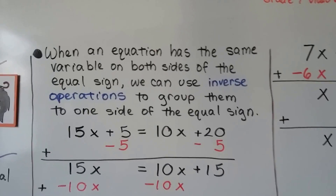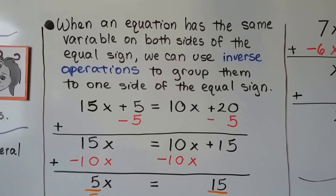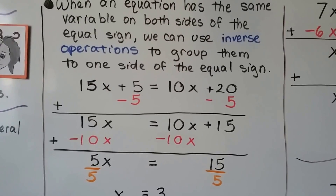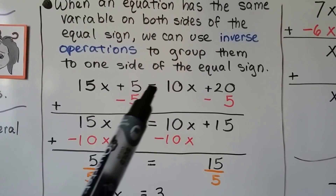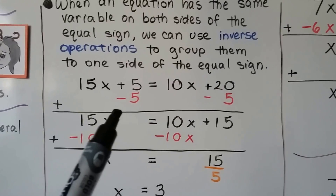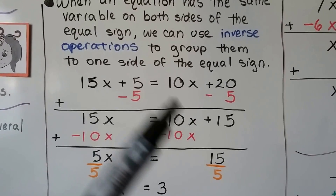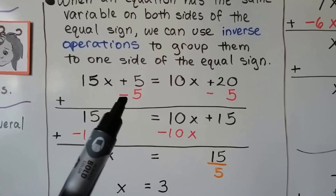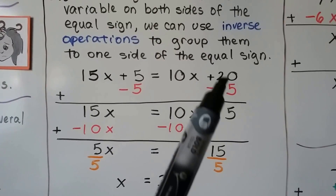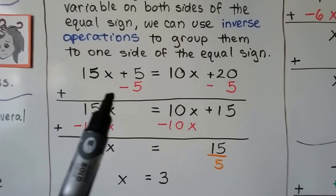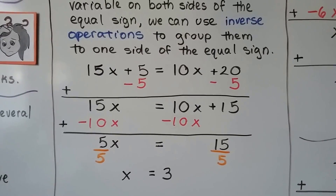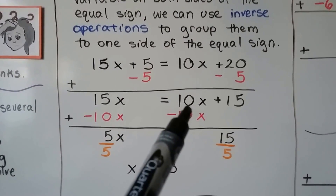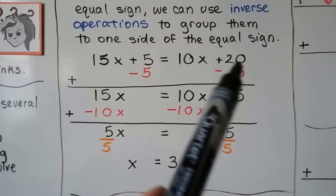When an equation has the same variable on both sides of the equal sign, we can use inverse operations to group them to one side. Here is 15x plus 5 equals 10x plus 20. We need to get all the numbers on one side and all the x's on one side. We can add a negative 5 to this side — that'll create a zero pair and get rid of it — and do the same thing on this side. Whatever we do on one side of the equal sign we have to do on the other. Now we have 15x equals 10x plus 15, since 20 minus 5 is 15.